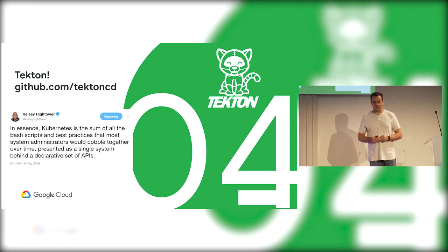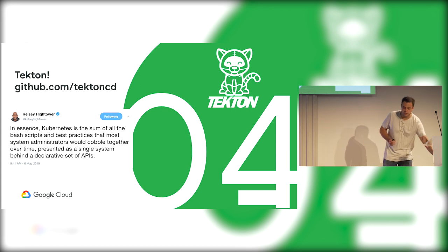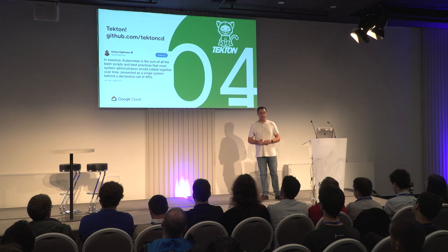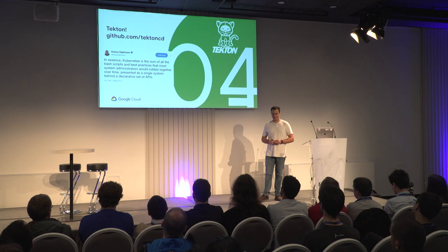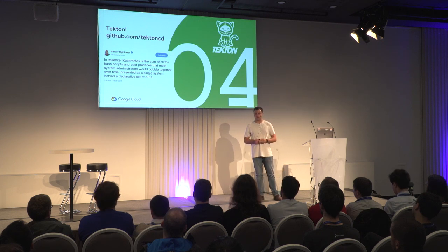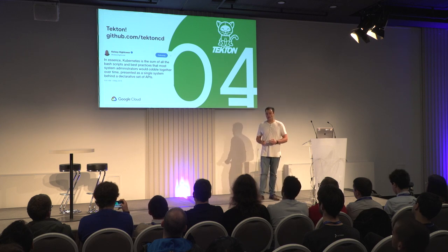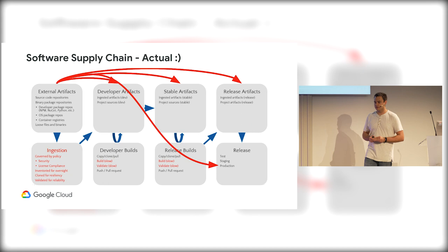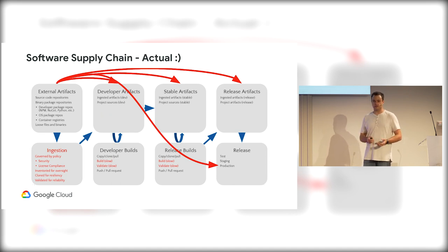Now that I've made a case for standardization in software delivery, I'll talk about Tekton and how we're hoping to do this for the industry. As Kelsey Hightower said, Kubernetes is a sum of all bash scripts and best practices that sysadmins and operators would have cobbled together, except presented as a single system behind a declarative set of APIs. Kubernetes handles the runtime aspects of your supply chain — where things get deployed and where they're running. But there are missing pieces: Kubernetes doesn't tell you how to handle external artifacts, how to build or test your software, manage artifacts, or decide what to deploy when. It just handles the actual deployment at the end.